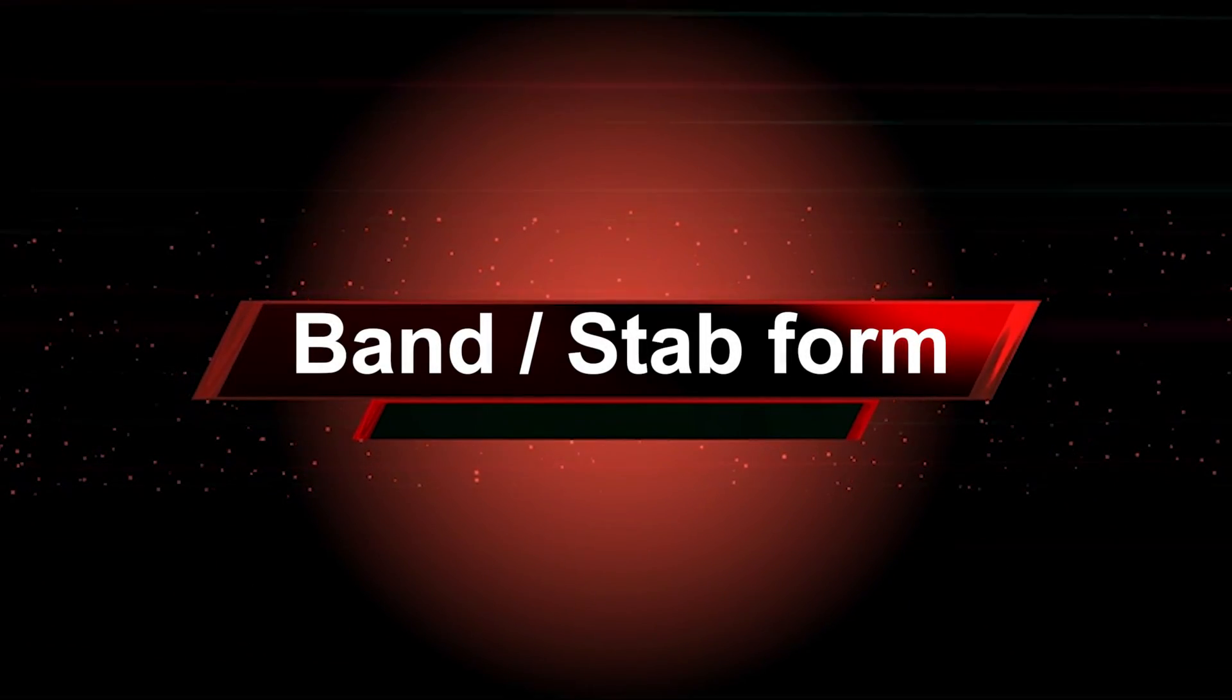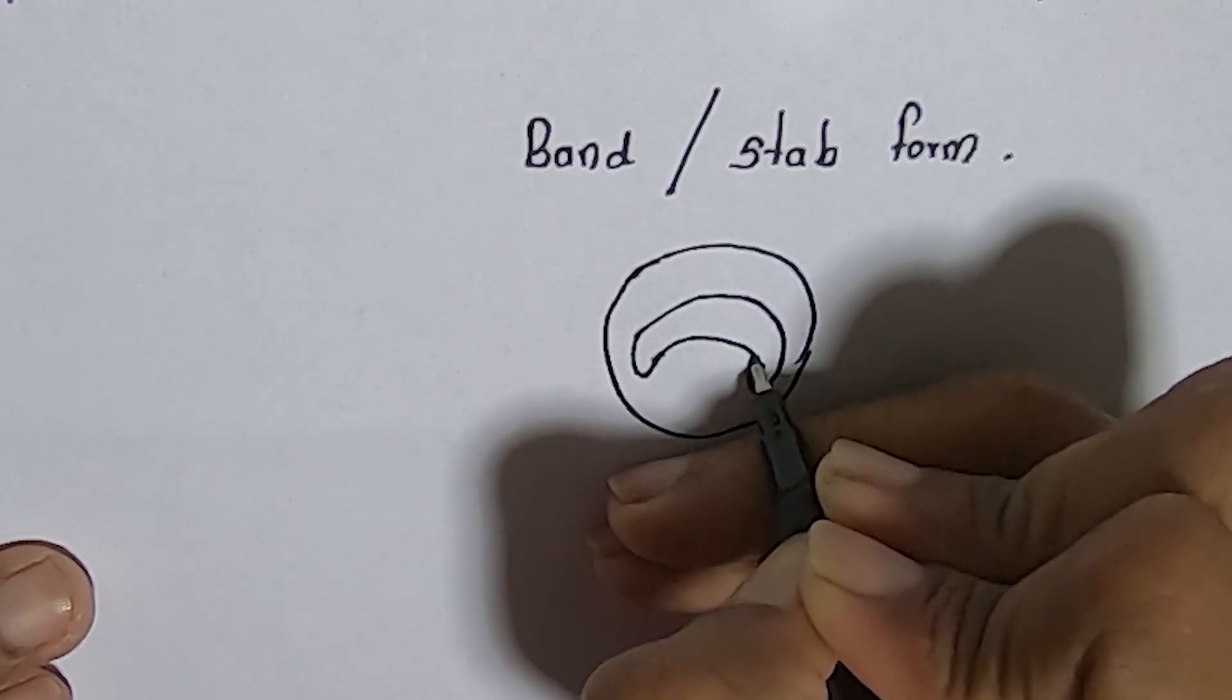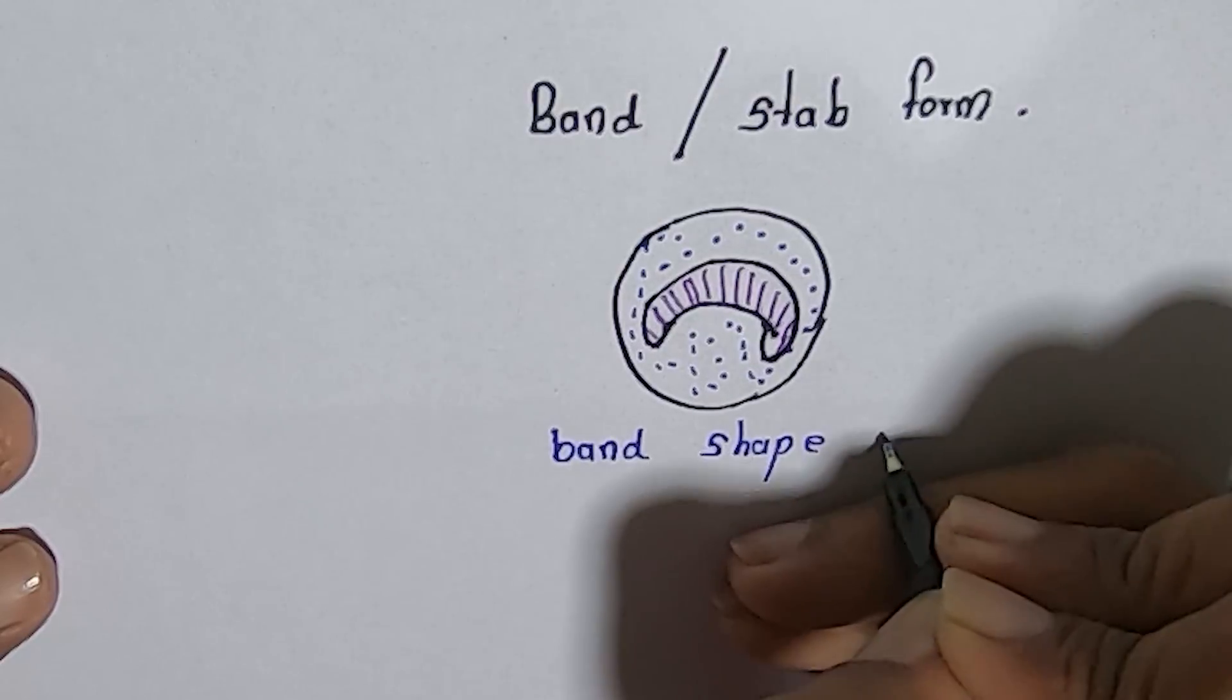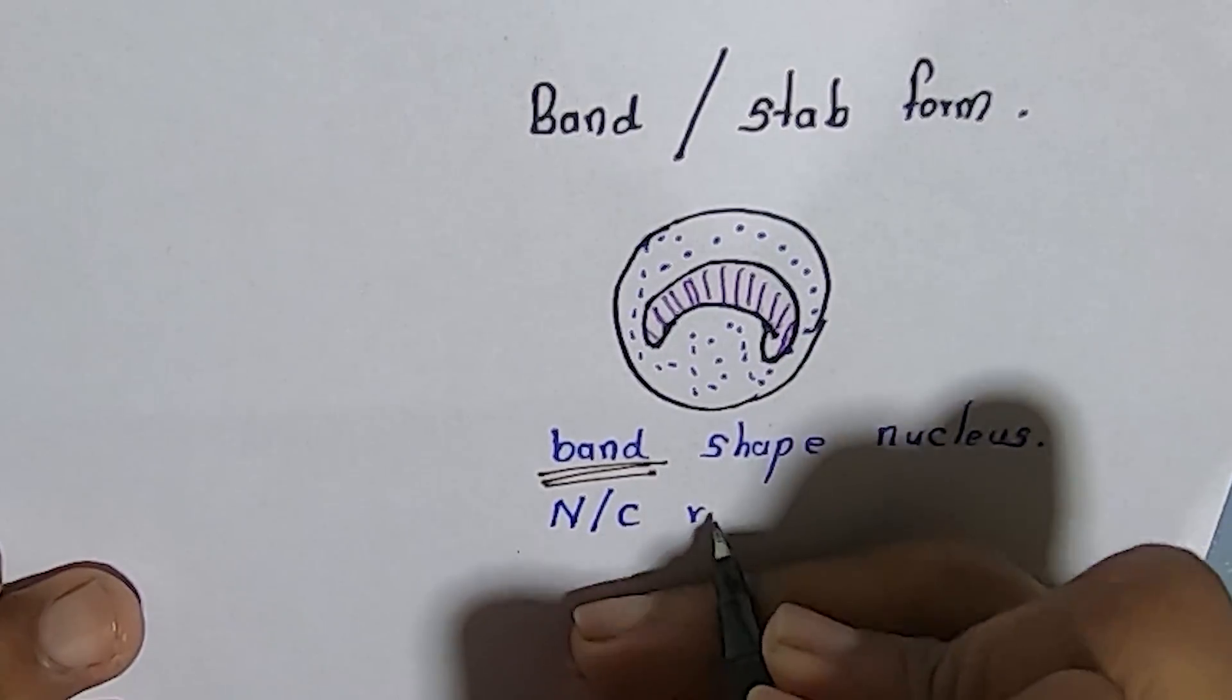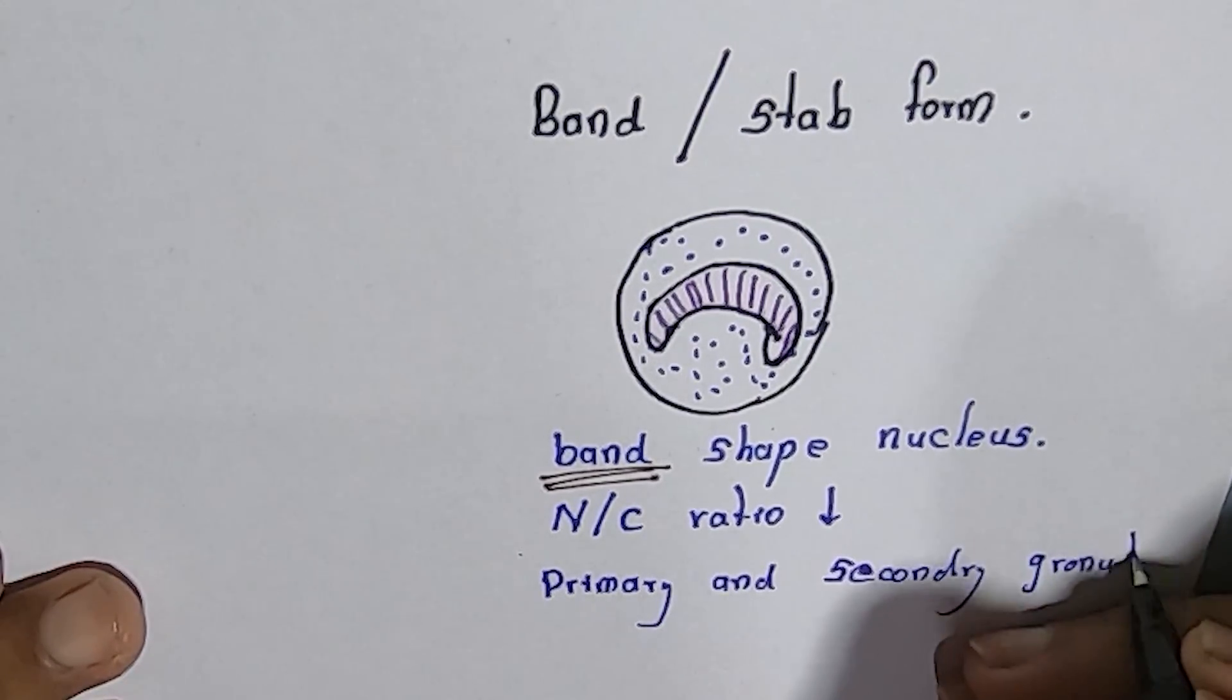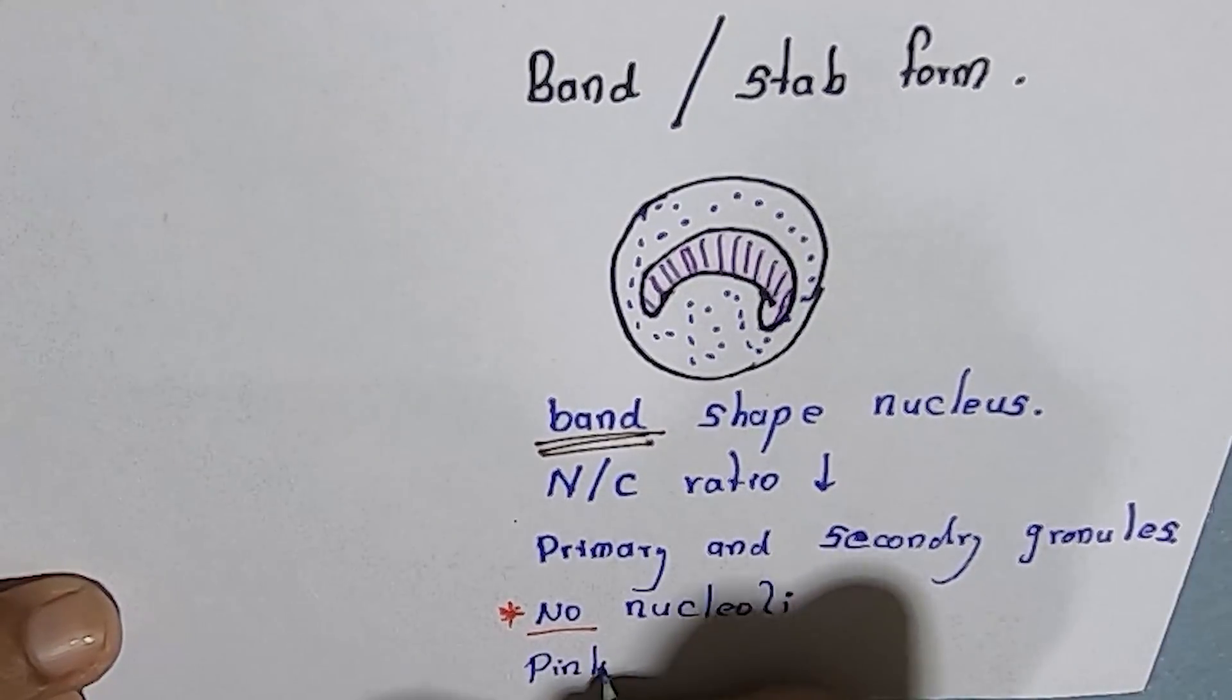Band neutrophils or stab forms: then metamyelocyte matures into band or stab form. The most specific feature of these cells is the presence of band-shaped nucleus. Also, nuclear to cytoplasm ratio is low. Cytoplasm contains many primary and secondary granules, and it does not contain nucleoli. And cytoplasm is pinkish in color.